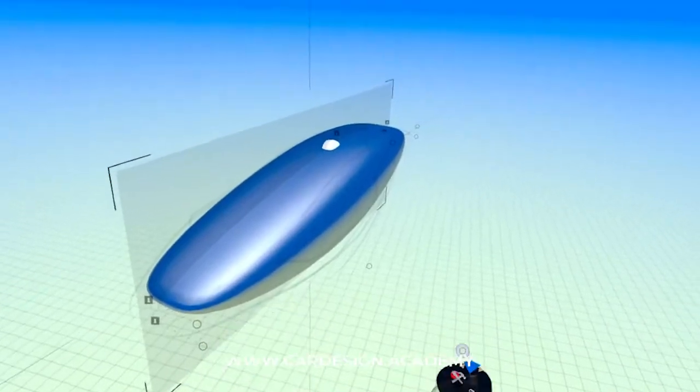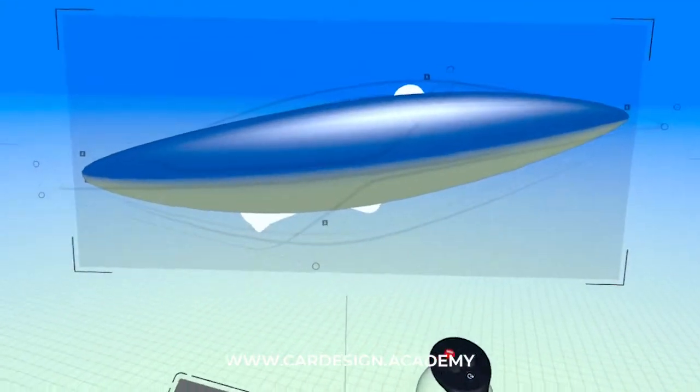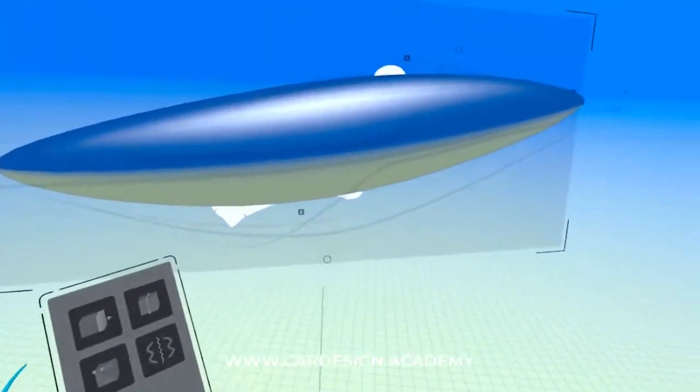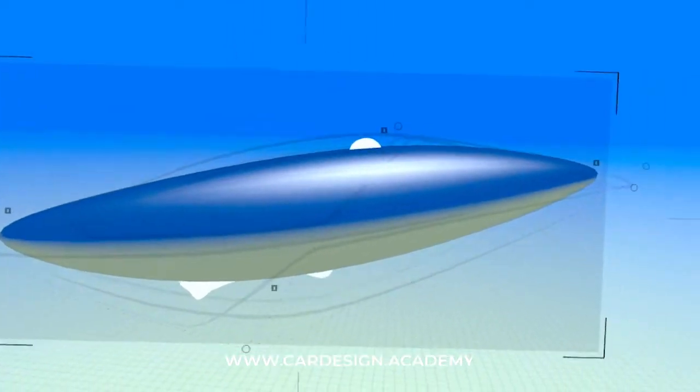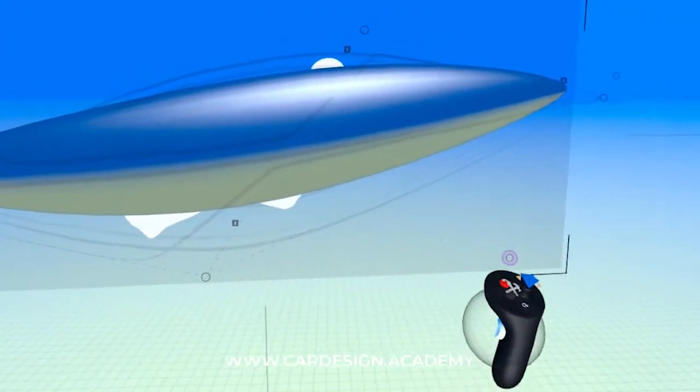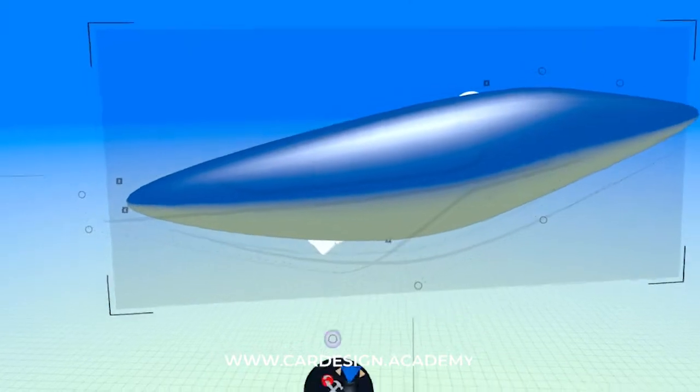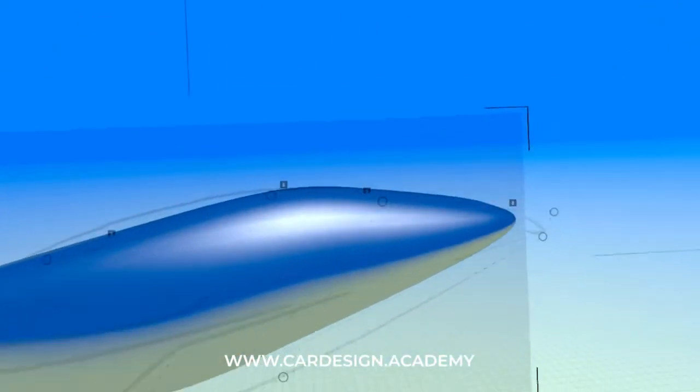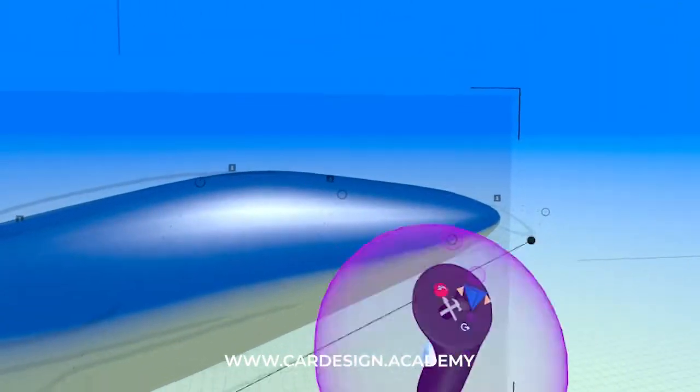So now if I turn subdivision level on, it's starting to take on more of the character of the original sketch. And the more edit points I keep adding, the more defined it gets.